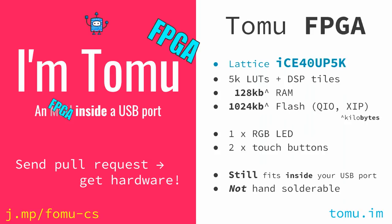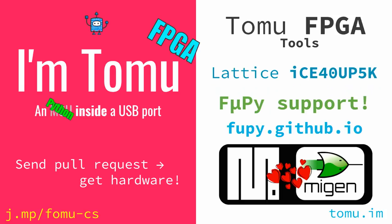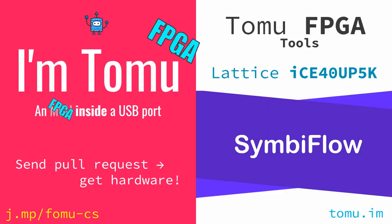Wir haben uns entschieden, wir wollen ein FPGA in einen USB-Stecker einbauen. Ich habe ein bisschen Hardware hier. Wenn ihr uns helfen wollt, kann ich euch einen geben. Aber Achtung: es gibt noch keinen Bootloader. Ihr könntet das als eine RISC-V-CPU verwenden. Es läuft FU-Python drauf und es gibt eine total quelloffene Toolchain dafür, namens SymbiFlow.